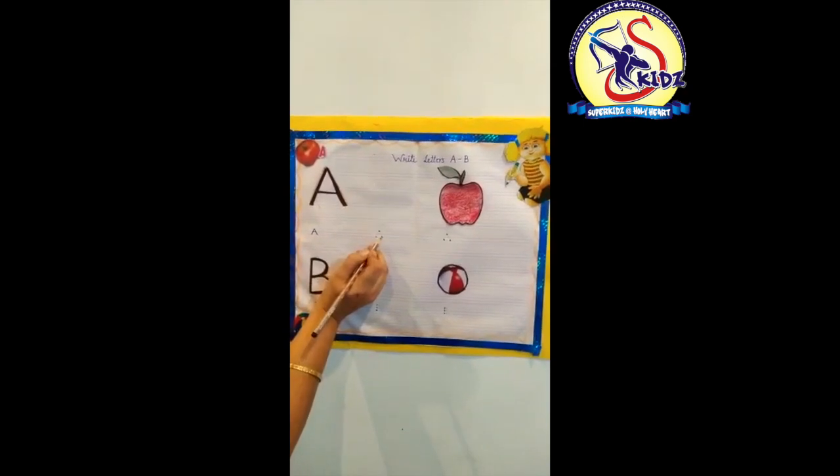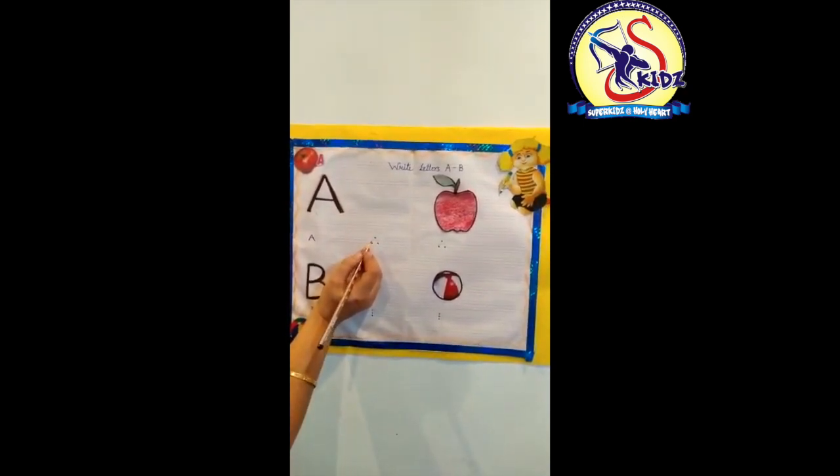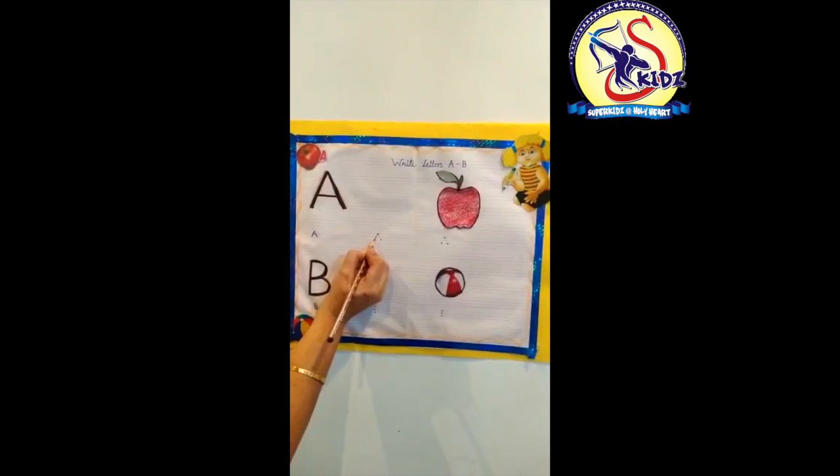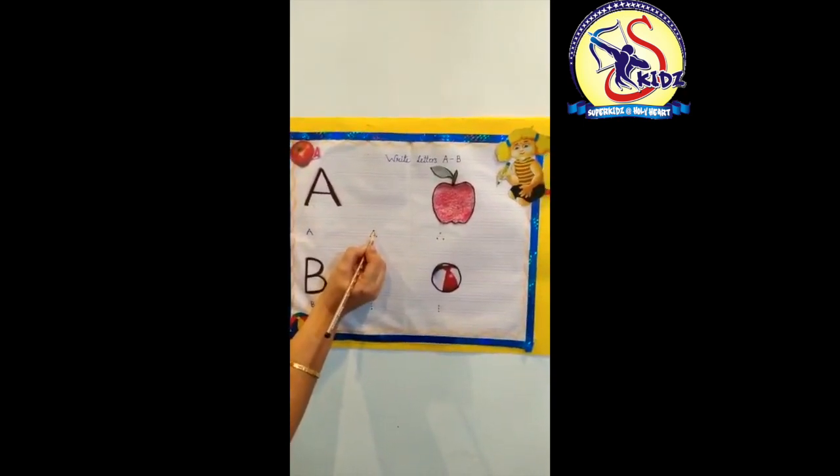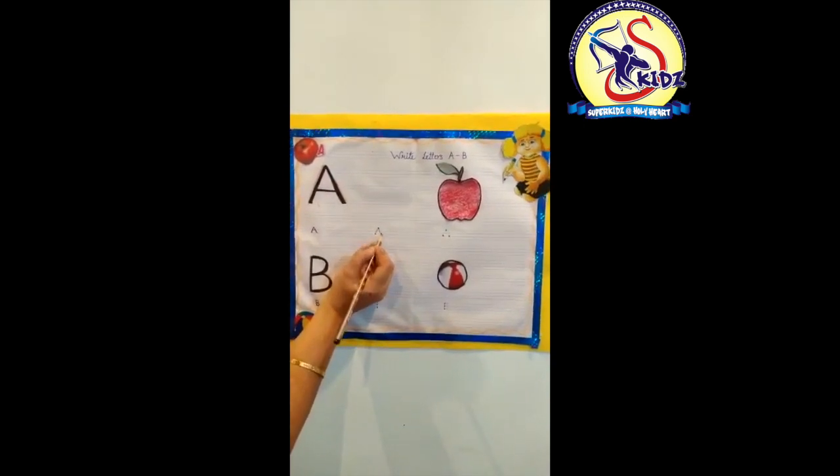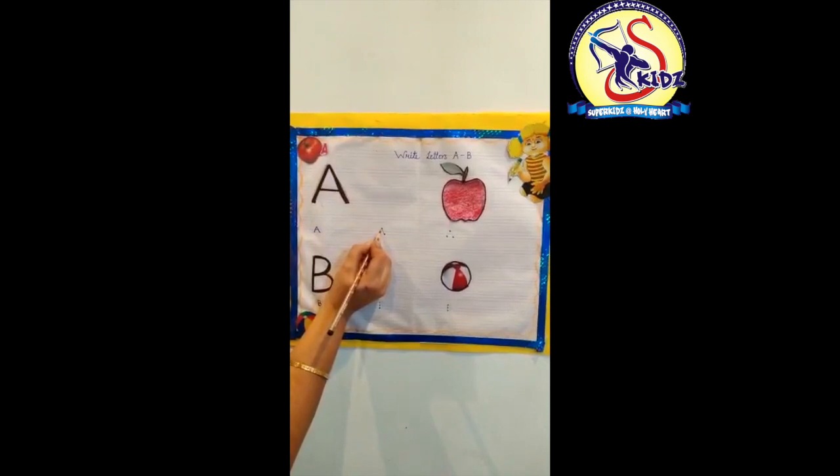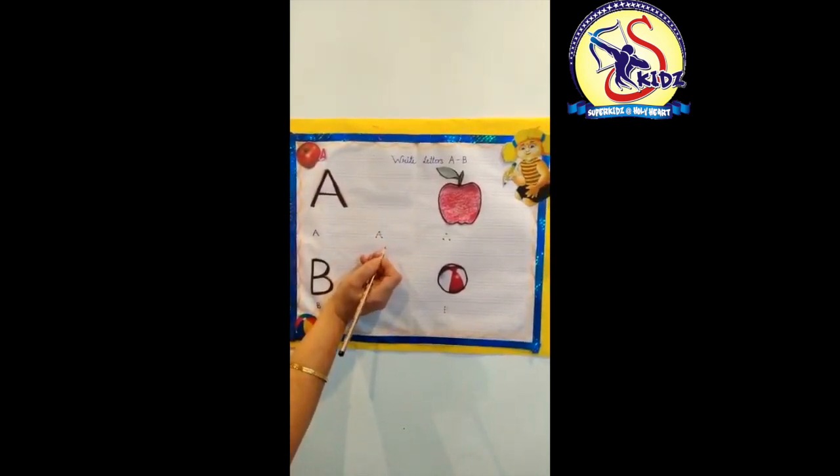One, two, and three dots. First of all, start from the top. Come downward to make a slanting line. Again make a slanting line to another side. And now a sleeping line in between these two slanting lines. And this is letter A.